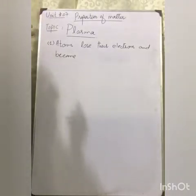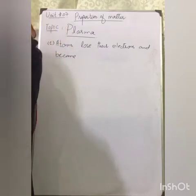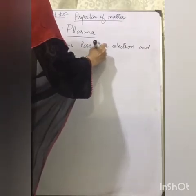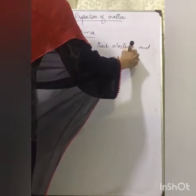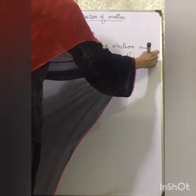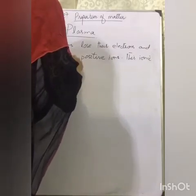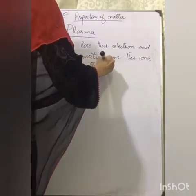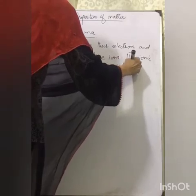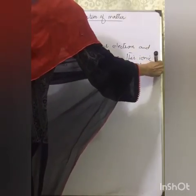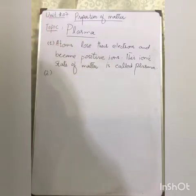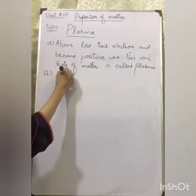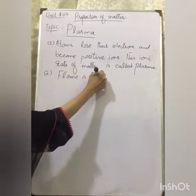Atoms lose electrons and become positive ions. This ionic state of matter is called plasma. A very simple example of plasma is flame — flame is a form of plasma.